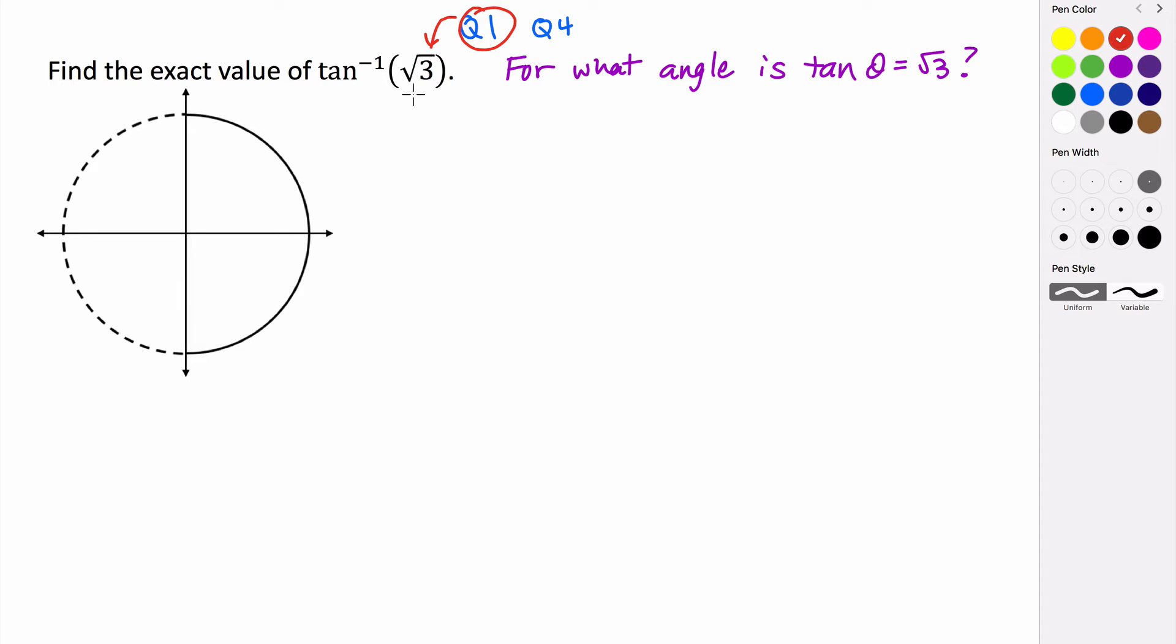And so now we have to figure out what angles give us a tangent of √3. Now, if you recall, the tangent of theta is equal to our y-coordinate divided by the x-coordinate. So if we think about all of our measures in the first quadrant,